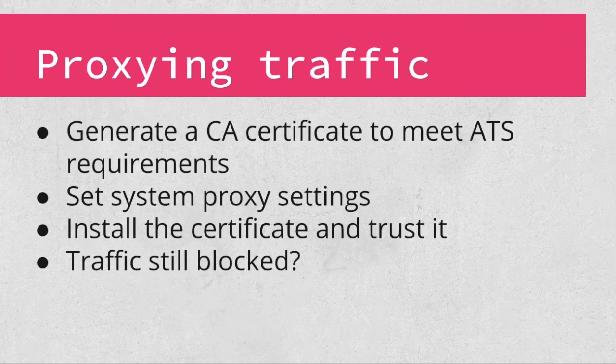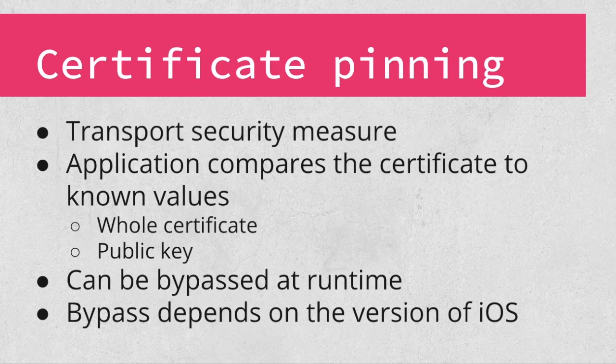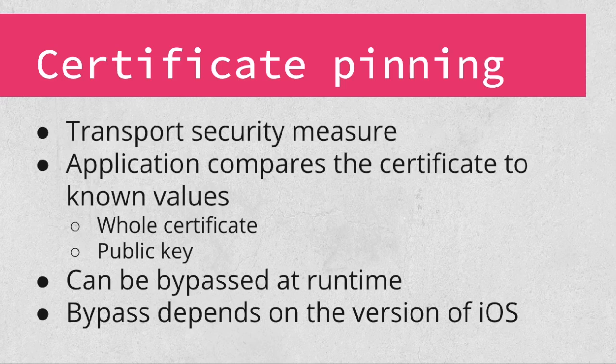Now let's say you've performed all those steps and you still aren't seeing any traffic in the proxy. You might be encountering a security measure known as certificate pinning. When an application pins a certificate, it compares the certificate presented by the server to the known values for the pinned certificate. There are different ways this can be done — for instance, the app might compare the whole certificate, a public key, or even just pin the CA certificate instead of the leaf certificate. This works very well to protect against a hostile endpoint or a man-in-the-middle attack. It can be bypassed at runtime on a jailbroken device or by tampering with the application before installing it. The specifics of the bypass typically depend on the version of iOS, but can also depend on any custom network frameworks and libraries the application uses.